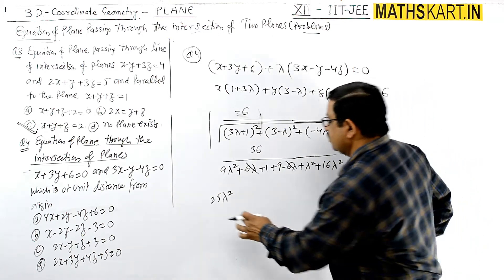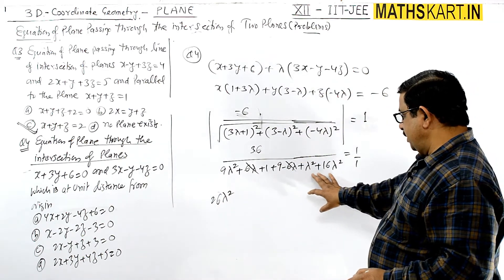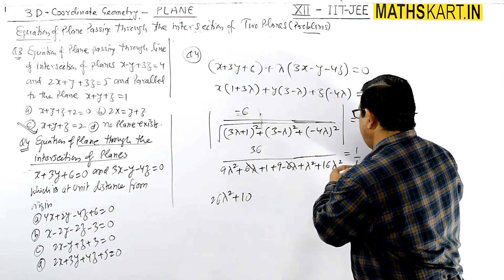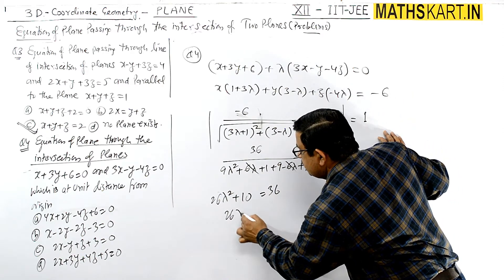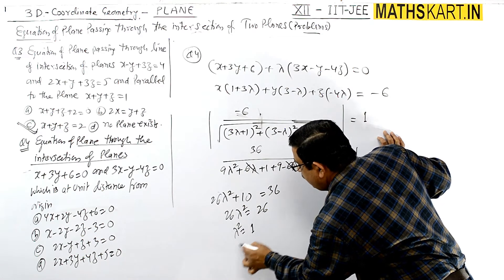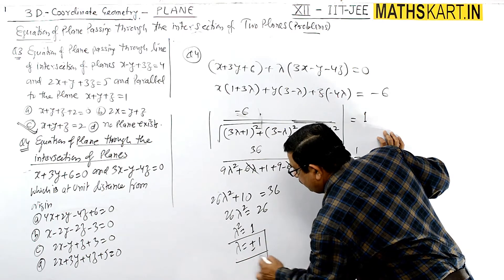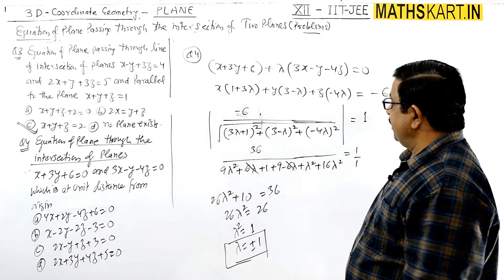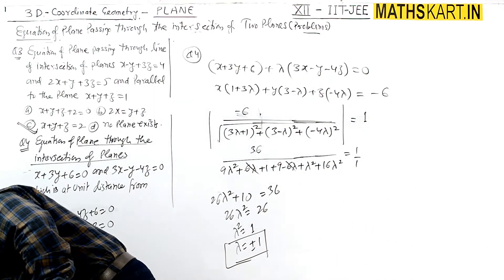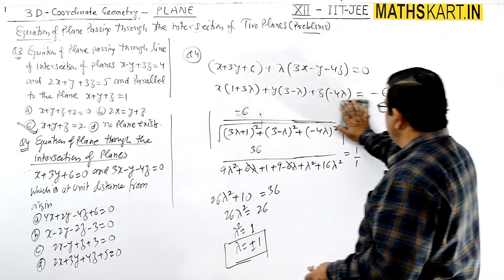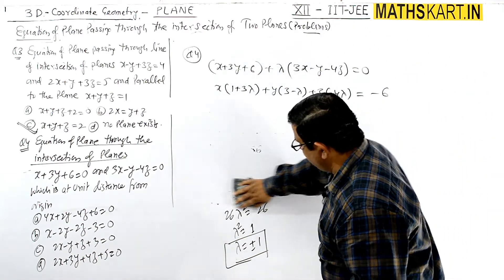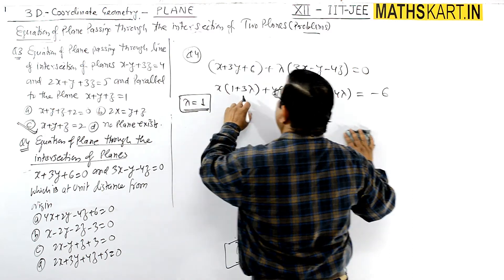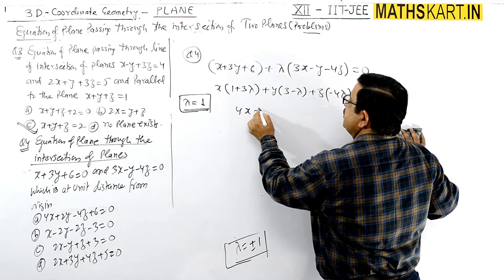Combining like terms: 26 lambda squared plus 10 equals 36, so 26 lambda squared equals 26, giving lambda squared equals 1, therefore lambda equals plus or minus 1. We will now substitute each value of lambda to get two plane equations.